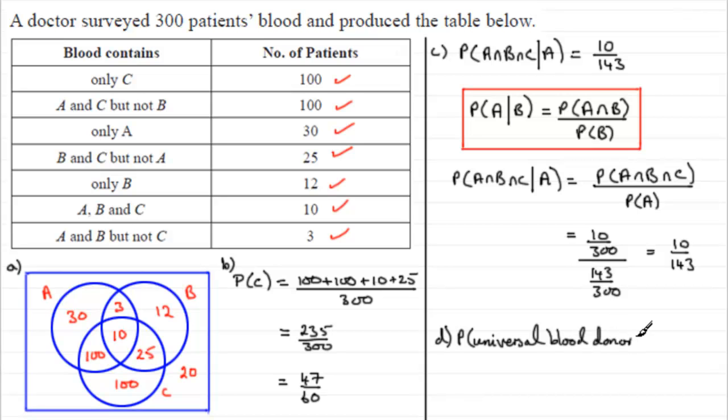So, how many people haven't got substance A, B, or C in their blood? Well, clearly, it's this 20 out here. So, it's got to be 20, then, out of the 300. And if you reduce this down, you'll find that you'll get one 15th. All right?